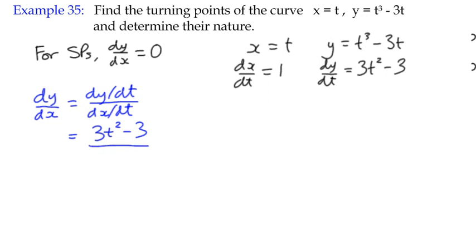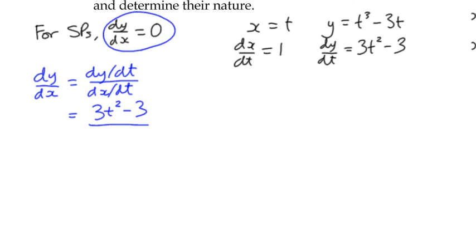So far, so good. For the stationary points, we want to set this value equal to zero. So we can rewrite for stationary points, 3t² - 3 should equal zero.